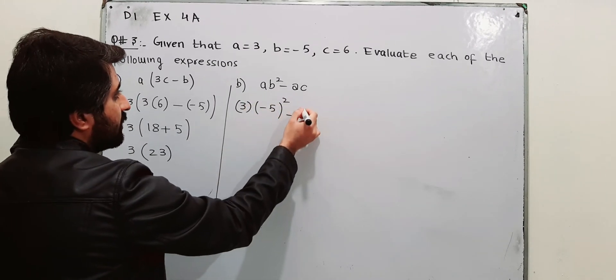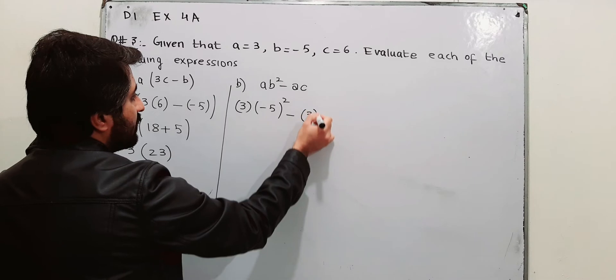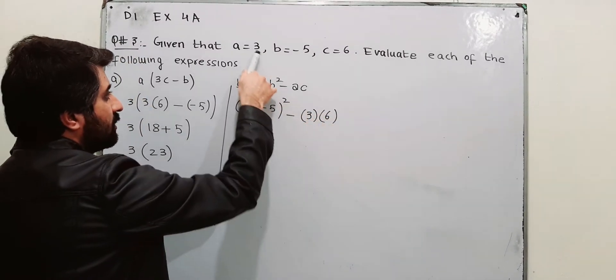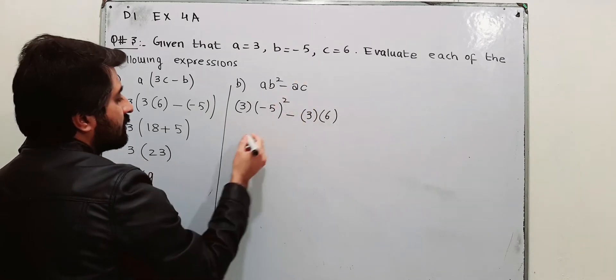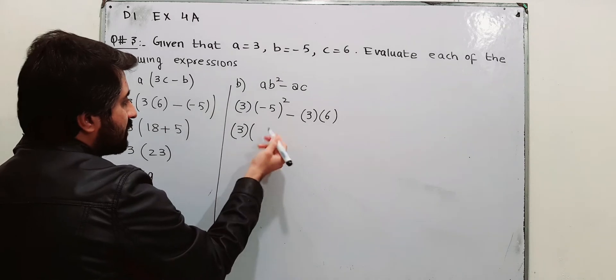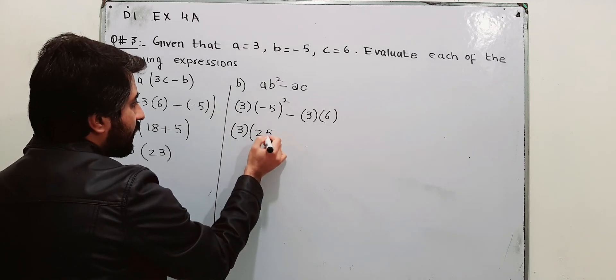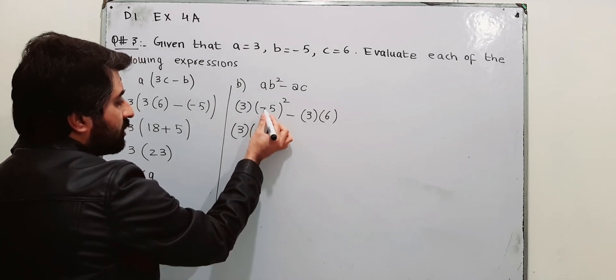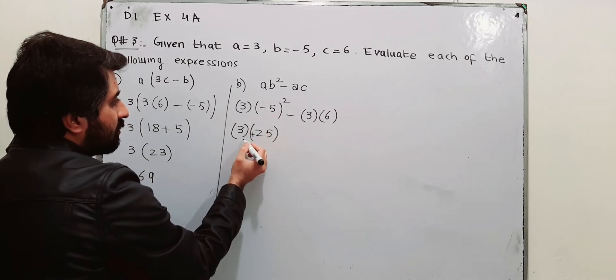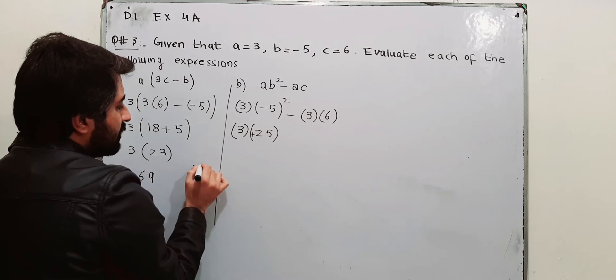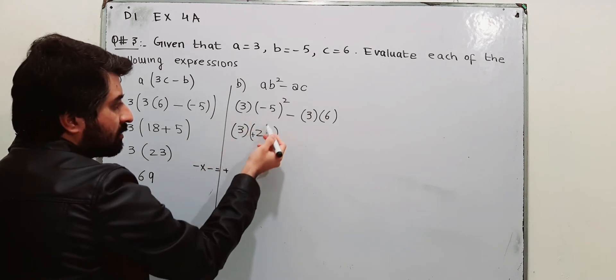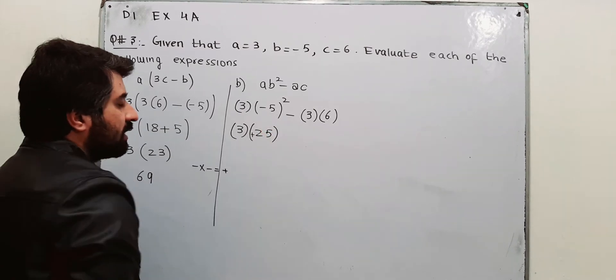B² minus A is again 3 and C is 6. A is 3, C is 6. That becomes 3. Minus 5 square is basically 25. When you take square of negative, it becomes positive because minus into minus is plus. And 5 square is 25, that is 5 into 5.